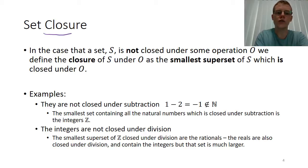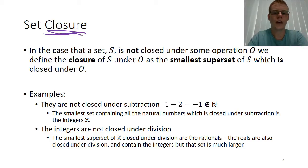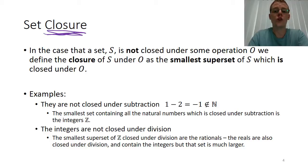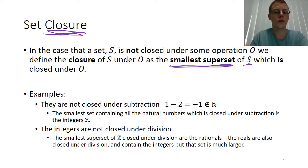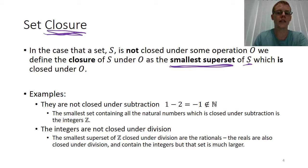Now we will talk about the closure of a particular set under that operation. If we have a set that's already closed under an operation, then it is its own closure. But if we have a set S and it is not closed under some operation O — like we said, the natural numbers were not closed under subtraction — we can define the closure of S under O as the smallest superset of S that is closed under that operation. A superset is just a set that contains the original set as a subset. So to reiterate: the closure of S under an operation is the smallest set that contains all of the elements of S but which is actually closed under the operation.